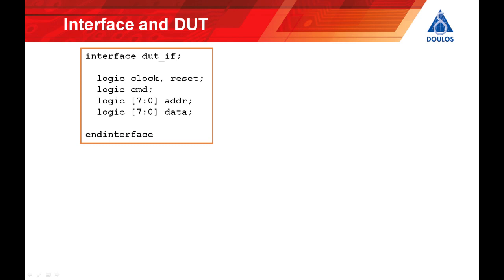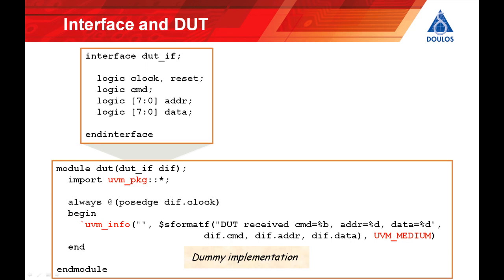Here we can see the source code of the SystemVerilog interface. You can see that we've simply added the variables representing the clock, the reset, the buses, and so on. Then comes the Design Under Test, which for the purposes of our trivial example is just a dummy implementation. You can see we've got an interface port on the Design Under Test, then it imports the contents of the standard UVM package, and there's an always block sensitive to the positive edge of the clock, using the standard UVM reporting mechanism to print out a message whenever the DUT receives a transaction.